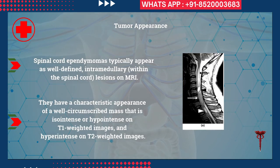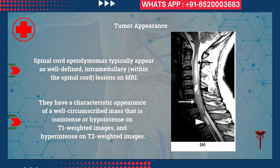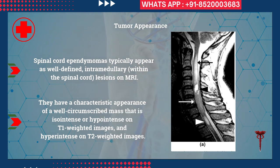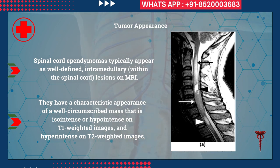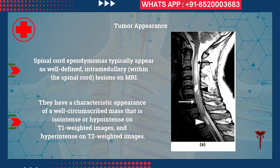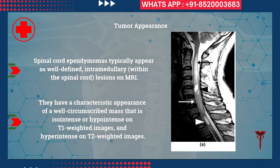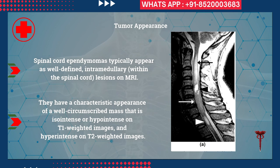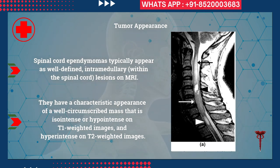Spinal cord ependymomas typically appear as well-defined, intramedullary — within the spinal cord — lesions on MRI. They have a characteristic appearance of a well-circumscribed mass that is isointense or hypointense on T1-weighted images and hyperintense on T2-weighted images.